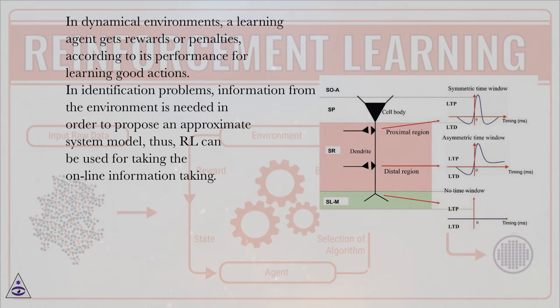In dynamical environments, a learning agent gets rewards or penalties according to its performance for learning good actions. In identification problems, information from the environment is needed to propose an approximate system model. Thus, RL can be used for online information gathering.